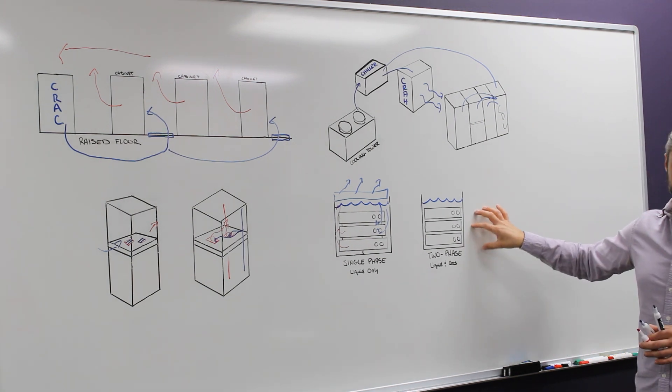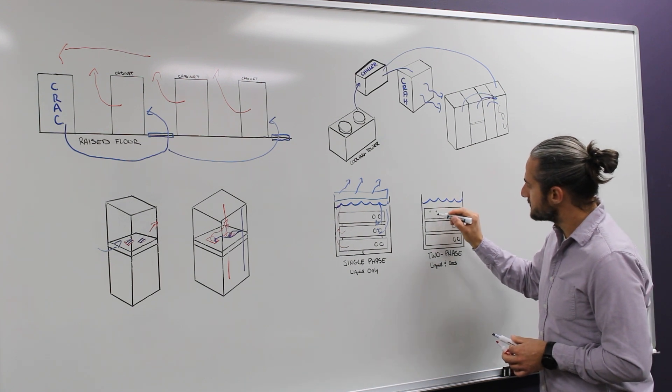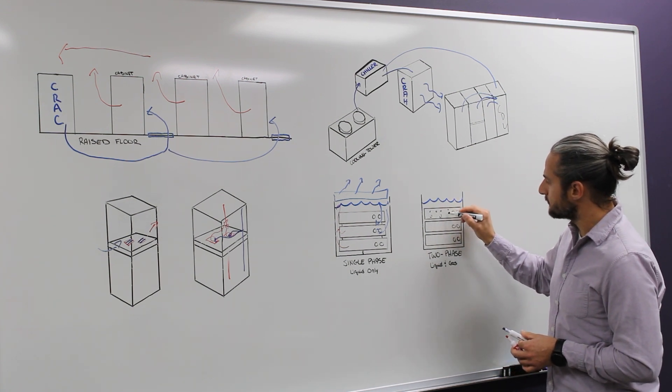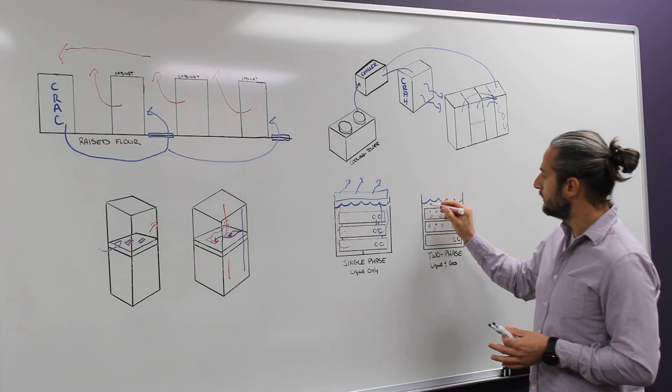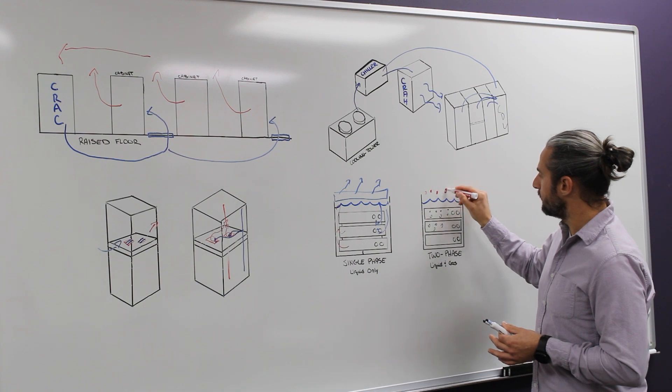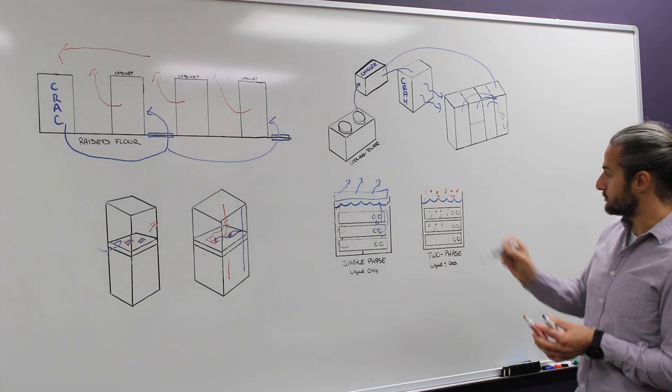In two-phase, it's the same thing, except you get to generate bubbles. So as the heat is picked up from the server blades, it boils the fluid, and you get these bubbles that start to rise, and you collect a vapor bubble or vapor gap at the top of your server in your immersion tank here,